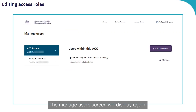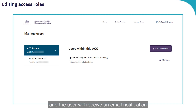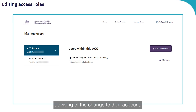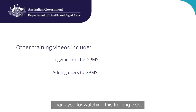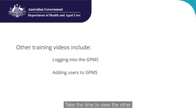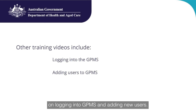The Manage Users screen will display again. The user's name will indicate the change to their access role, and the user will receive an email notification advising of the change to their account. Thank you for watching this training video on editing user access roles. Take the time to view the other training videos in this series on logging into GPMS and adding new users.